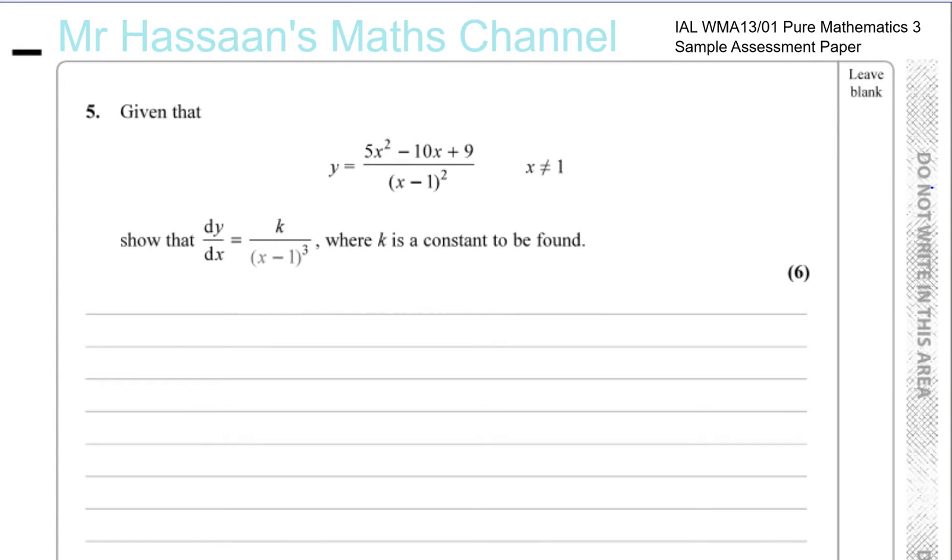So now for question number 5 from the sample assessment paper for Pure Mathematics 3 at International A-Level. This question is about differentiation, and here we are asked to differentiate this equation: y equals 5x squared minus 10x plus 9 over x minus 1 squared. And of course x can't equal 1, otherwise this will be undefined—you'll have 0 in the denominator.